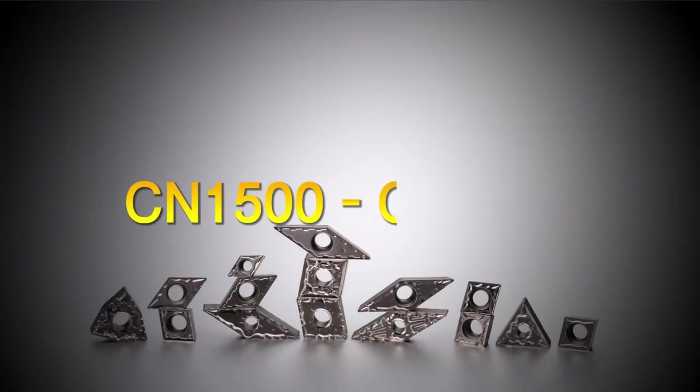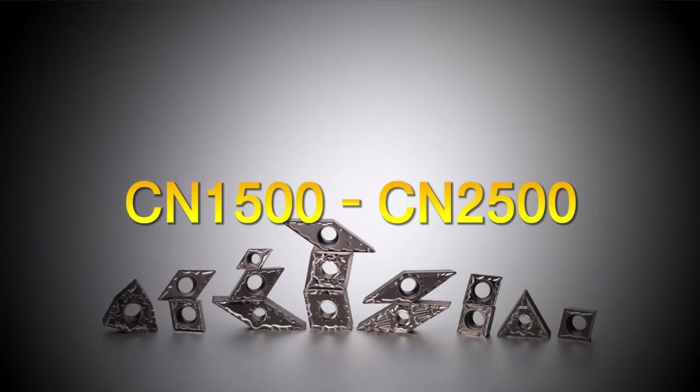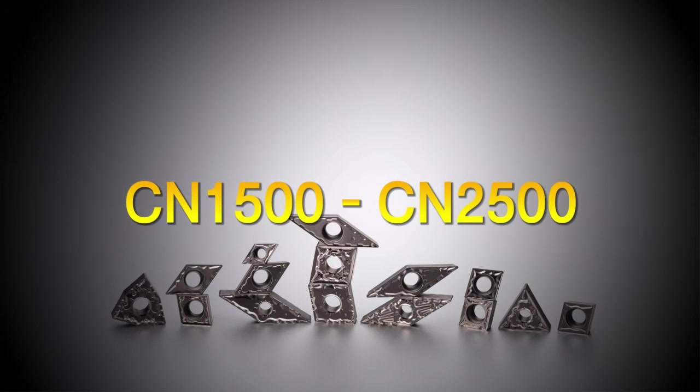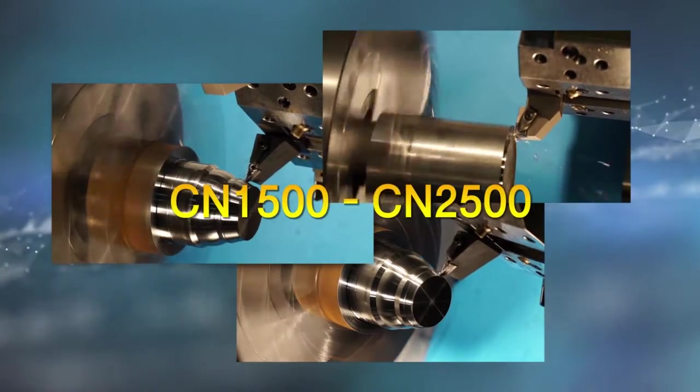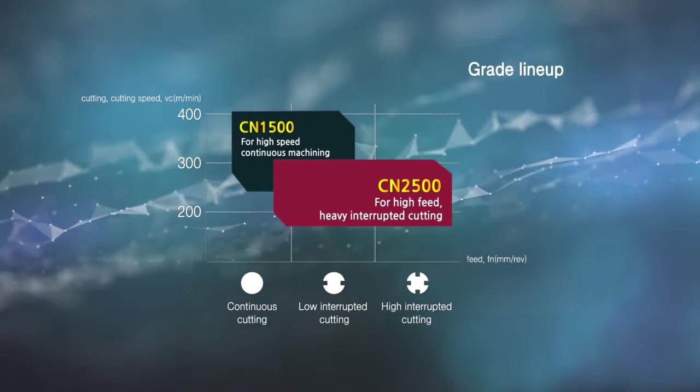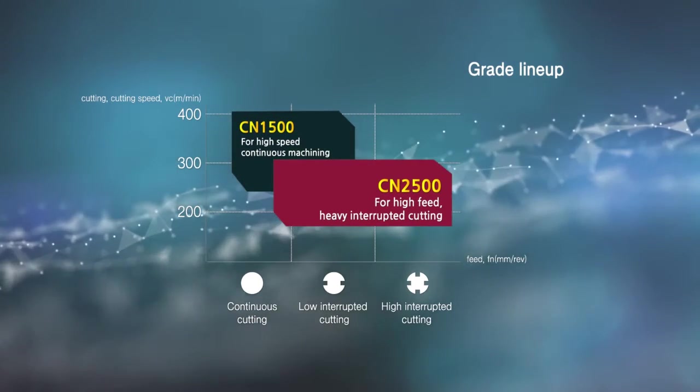The new generation CERMET series CN1500 and CN2500. CN1500 is suitable for high-speed continuous machining. CN2500 is for high-feed and interrupted machining.